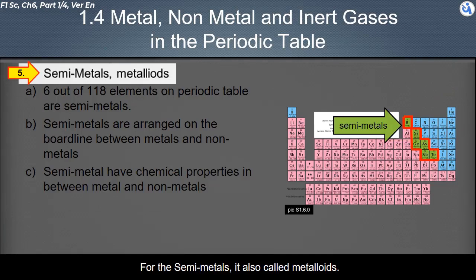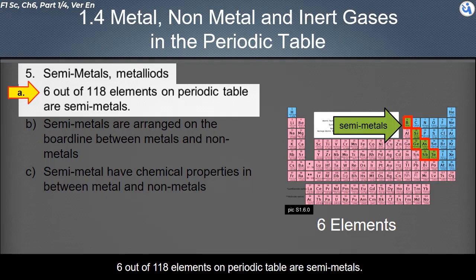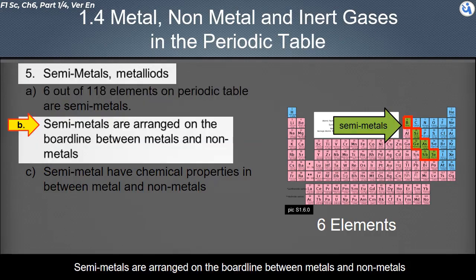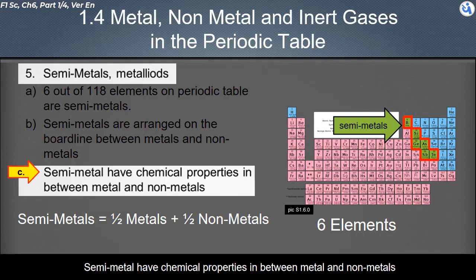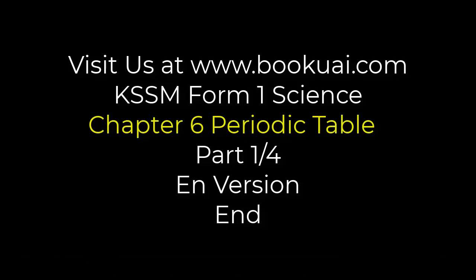Semi-metals, also called metalloids, make up six out of 118 elements on the periodic table. Semi-metals are arranged on the borderline between metals and non-metals in the periodic table. Semi-metals have chemical properties in between those of metals and non-metals.